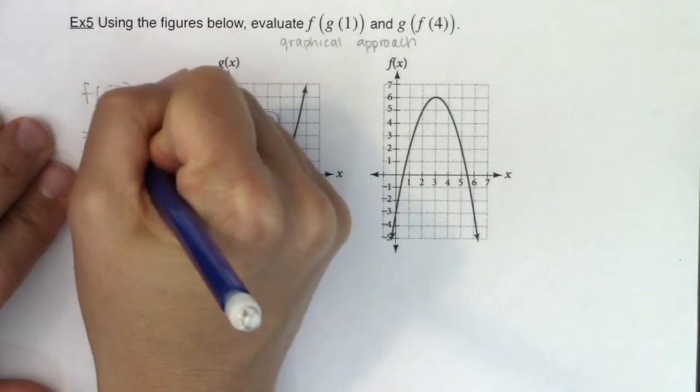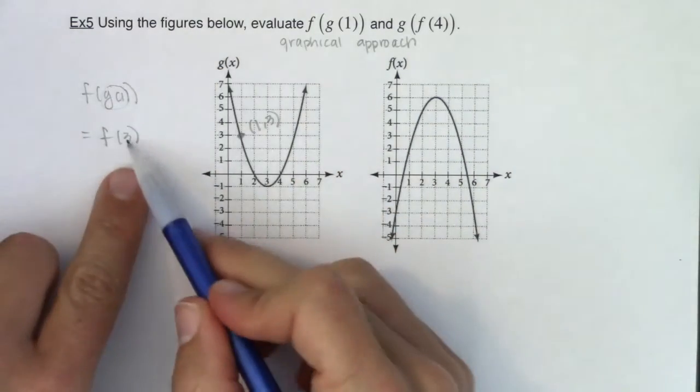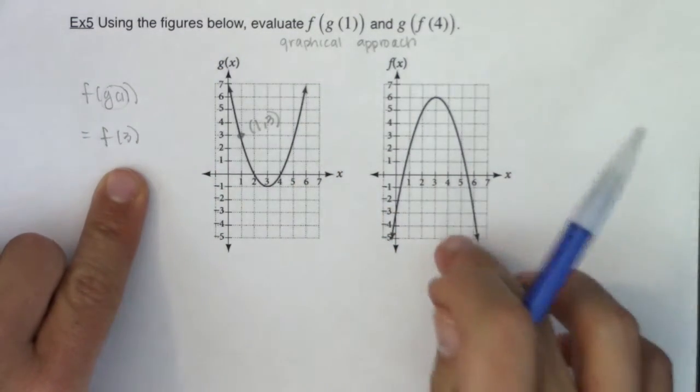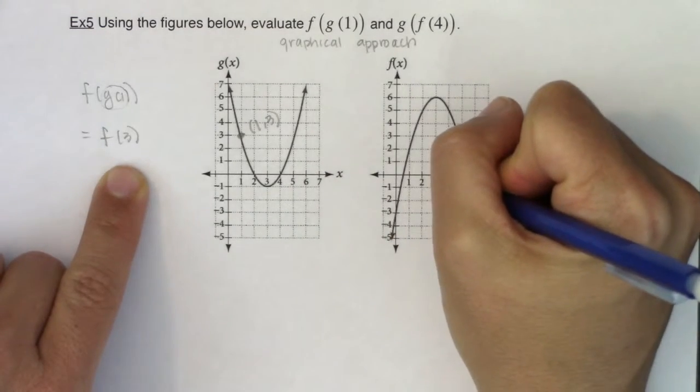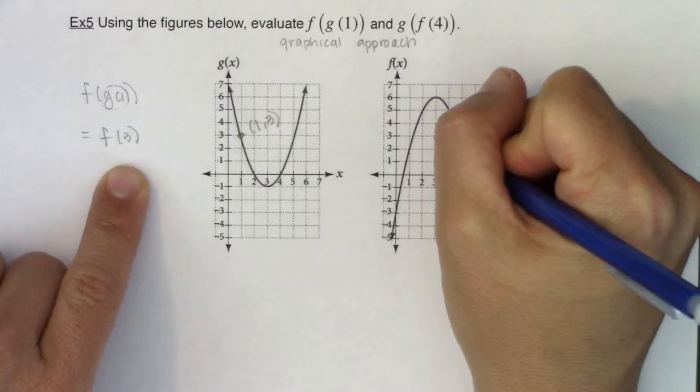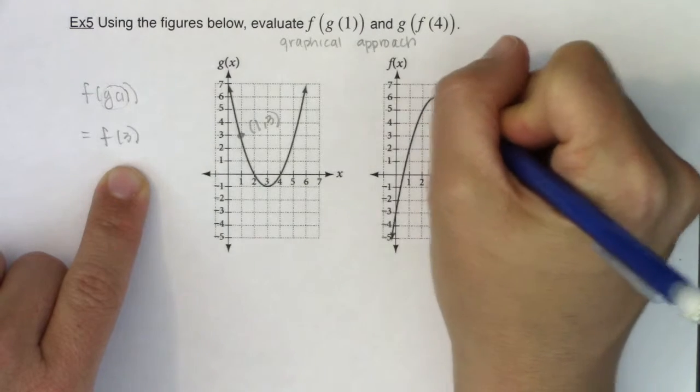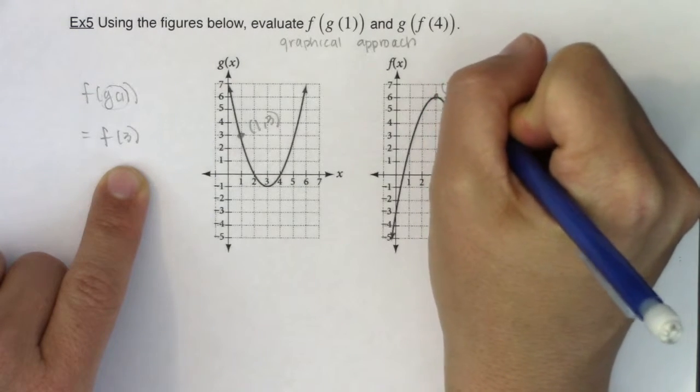Alright, so this will turn into f of 3. Now 3 is my new input and I need to head over to this graph because I'm asked on the f function. So let's go over to x equaling 3 and what is that function value? 1, 2, 3, 4, 5. It looks like this is the ordered pair 3, 6.